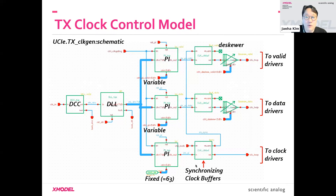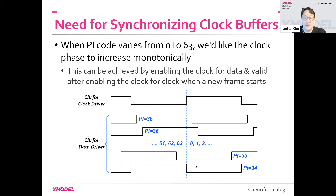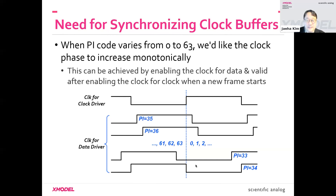We have a set of blocks called synchronizing clock buffers. When the PI code varies from 0 to 63, we want the clock phase to increase monotonically. This matters because we have a set of three clocks with different phases. In UCIE, clocks are not continuous — they can stop and go, because data transmission is done in units of frames.